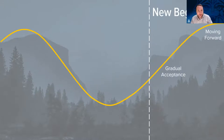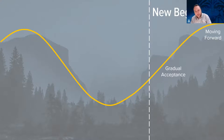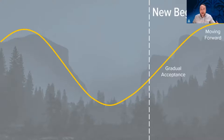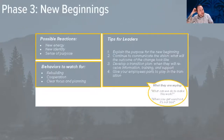Our goal is to move into the third phase: new beginnings. During that phase we start to get into gradual acceptance — 'I can kind of see myself into this future,' moving forward to 'this can work, this is going to be good, we can actually do this.' One activity we do with our staff when we teach this course is to think about the last 18 to 20 months of the pandemic. Where were you in this phase? It's not always one direction — you can move forward and then move back because different things are coming. There are tips for leaders for new beginnings as well, including possible reactions to watch out for.